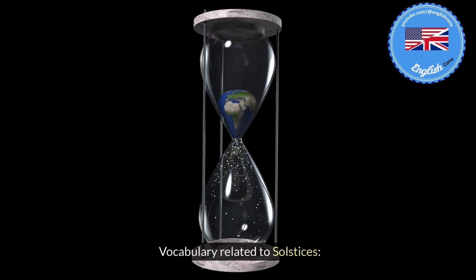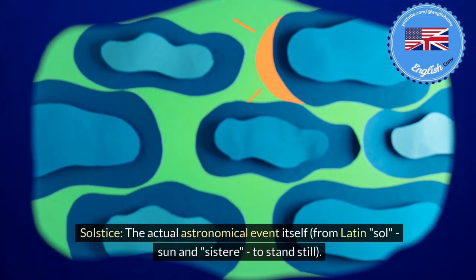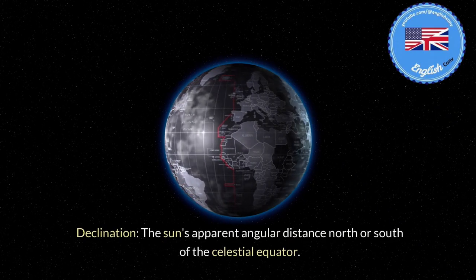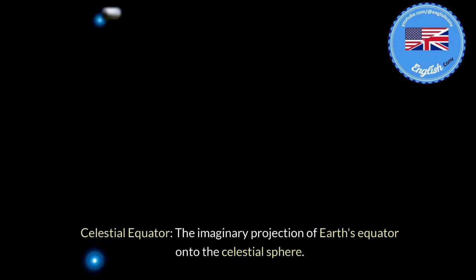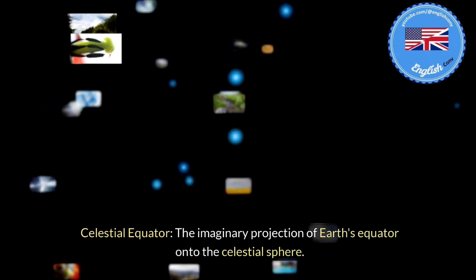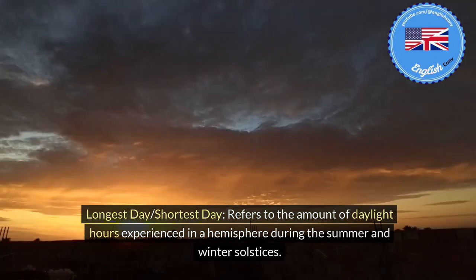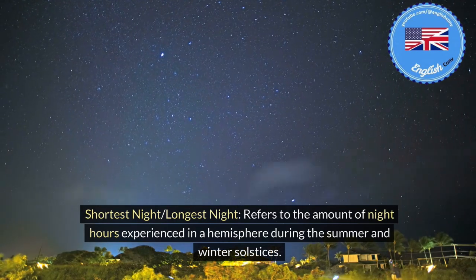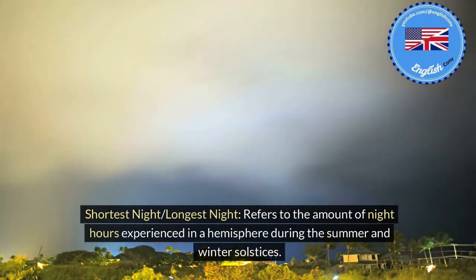Vocabulary related to solstices. Solstice: the actual astronomical event itself, from Latin — sol, meaning sun, and sistere, meaning to stand still. Declination: the sun's apparent angular distance north or south of the celestial equator. Celestial equator: the imaginary projection of Earth's equator onto the celestial sphere. Longest day and shortest day refer to the amount of daylight hours experienced in a hemisphere during the summer and winter solstices. Shortest night and longest night refer to the amount of night hours experienced during those same solstices.